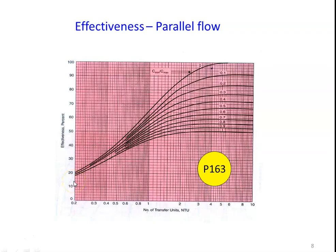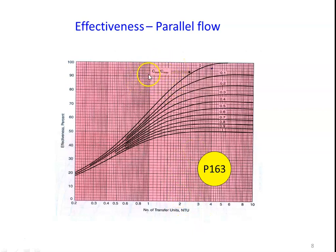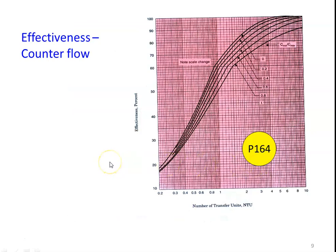To calculate the effectiveness using the NTU chart: NTU is on the x-axis, effectiveness percentage is on the y-axis, and the lines represent different values of C minimum by C maximum. For the rating problem, knowing NTU and the C ratio, find the effectiveness. For the sizing problem, knowing the effectiveness and C ratio, find the NTU. The chart on page 163 is for the parallel flow heat exchanger, and page 164 is for the simple counter flow heat exchanger.